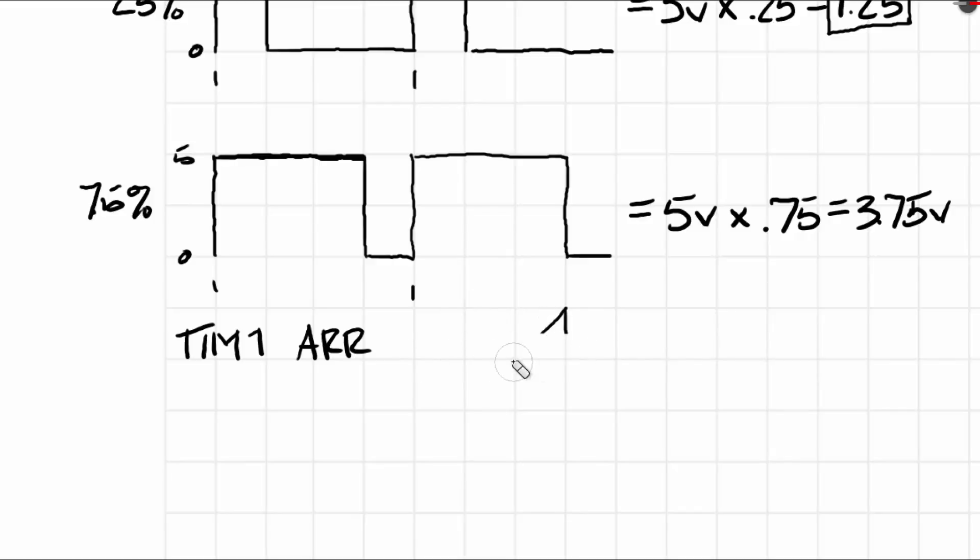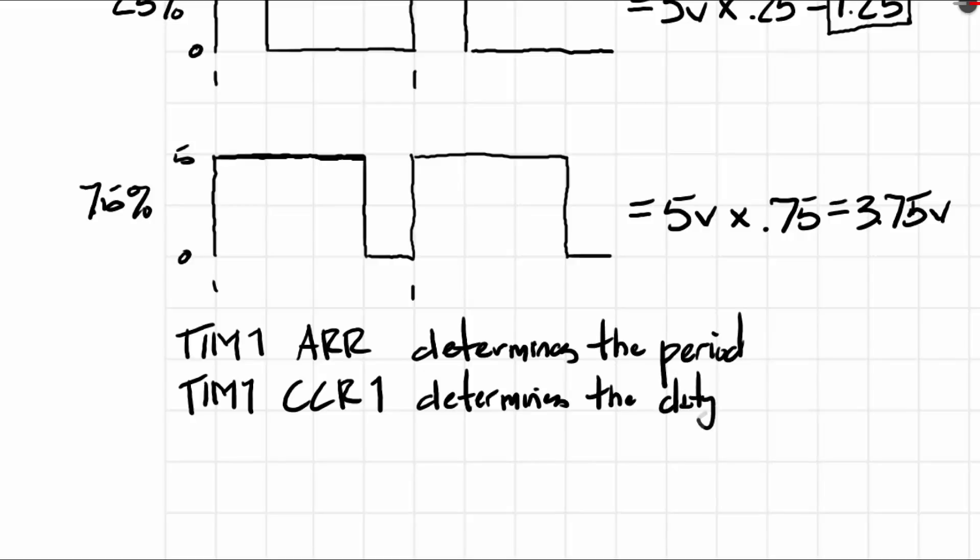The ARR determines the period. And the duty cycle is determined by the timer CCR register, which stands for the capture compare register. The one after the CCR actually corresponds to the channel that we'll be using to output the PWM.